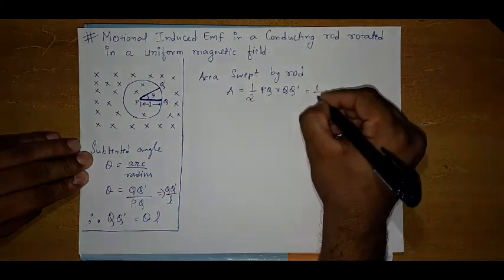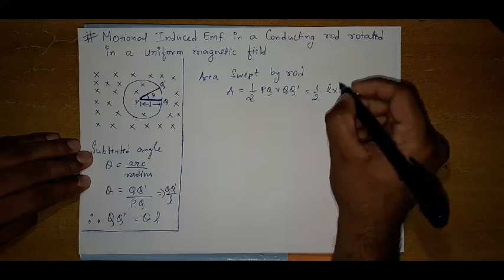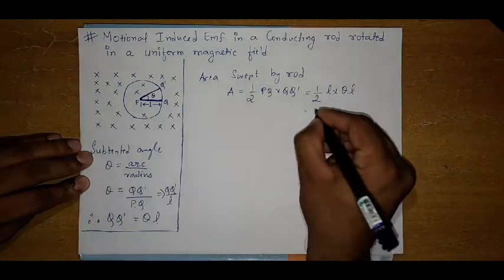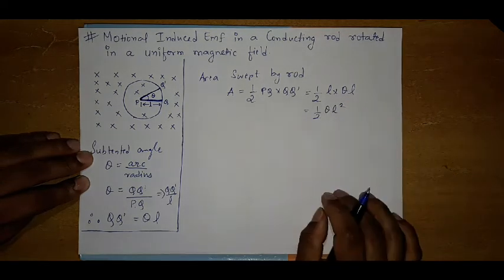So further this is half into PQ, which is L, into QQ dash. QQ dash is theta into L. So further it is half theta L square.